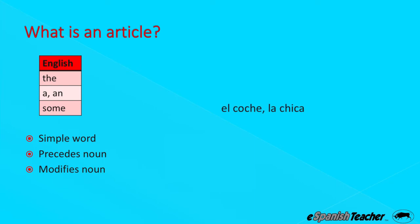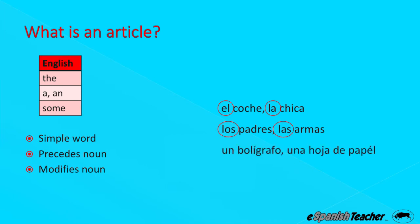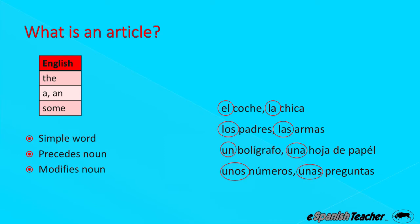In Spanish, let's look at some examples of articles followed by nouns. El coche. La chica. El and la are the articles — they precede the noun, they're simple words. Los padres. Las armas. Un bolígrafo — un is the article. Una hoja de papel. Unos números — unos is the article. Unas preguntas — unas is the article.